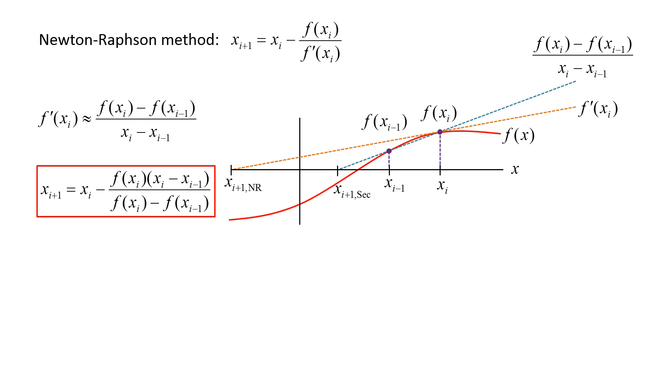xi plus 1 equals xi minus the function evaluated at xi times the quantity xi minus xi minus 1, divided by the function evaluated at xi minus the function evaluated at xi minus 1.